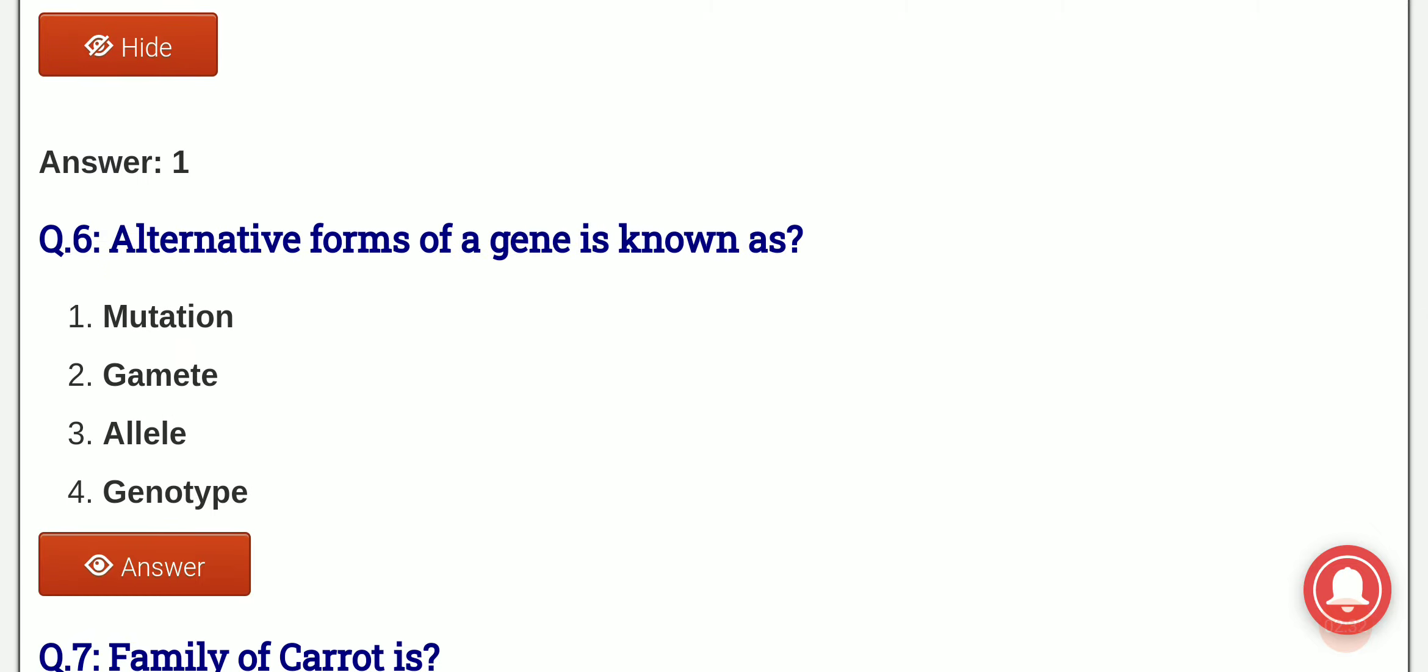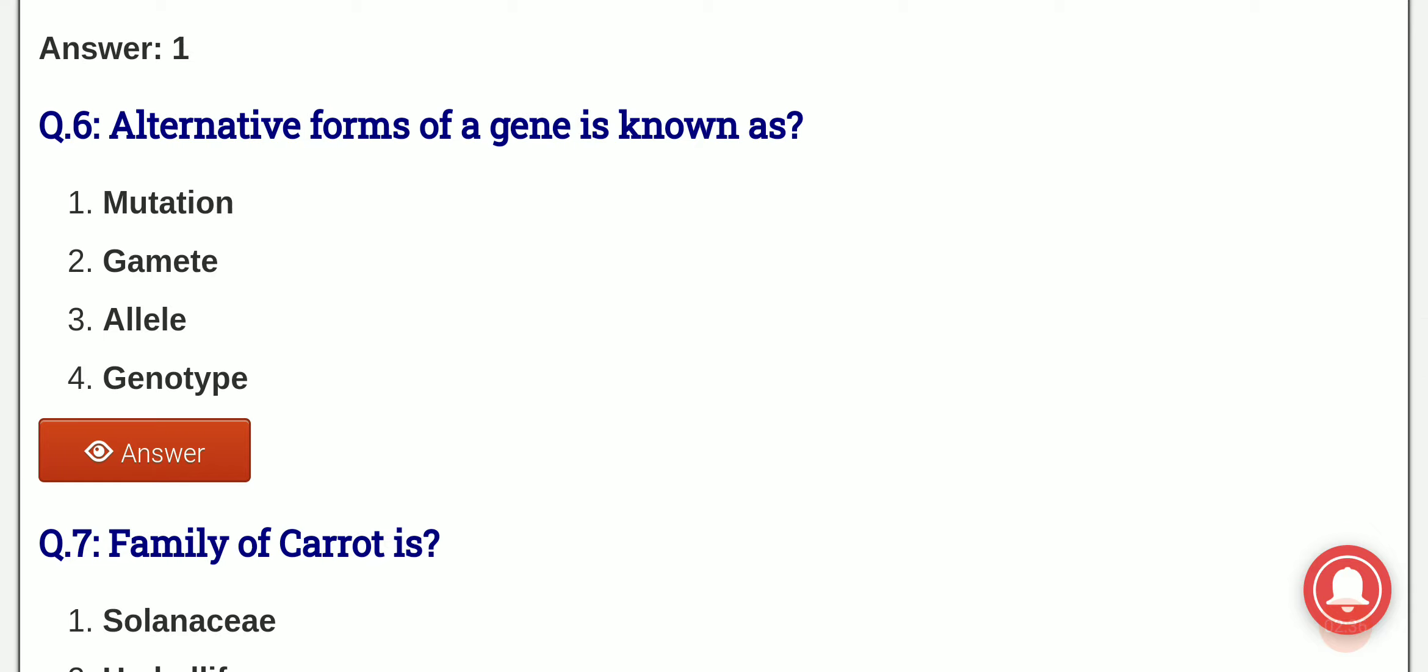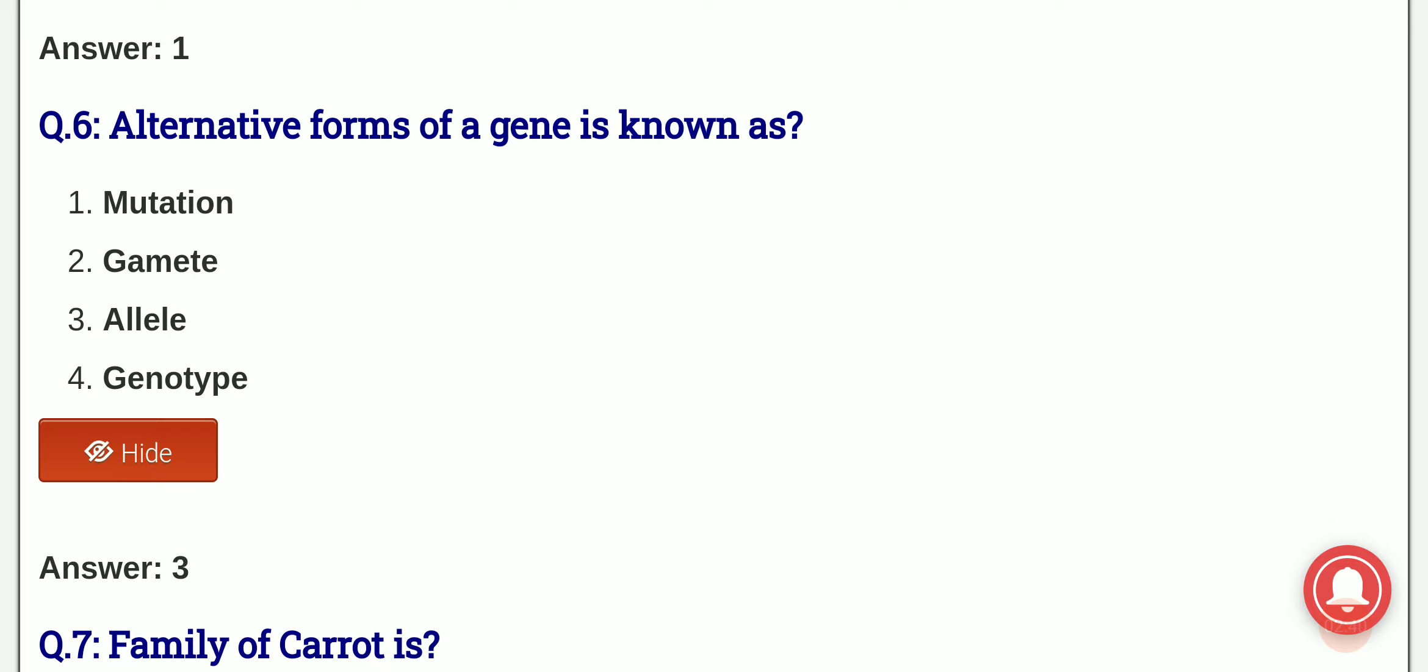Alternative forms of a gene is known as: the options are mutation, gamete, allele, genotype. And the answer is option 3, that is allele is known as the alternative form of gene.